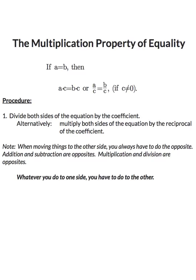Similarly to the addition property of equality, we have the multiplication property of equality. It says if a equals b, then you can multiply both sides of the equation by the same number, or you can divide both sides by the same number. One caveat: c cannot equal zero — that has nothing to do with solving equations but relates to the general rule that you're not allowed to divide by zero.